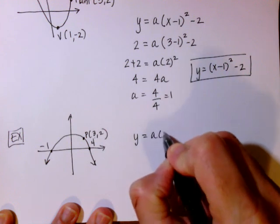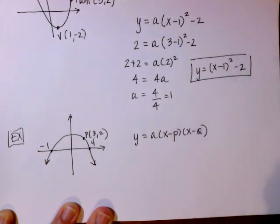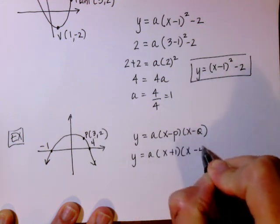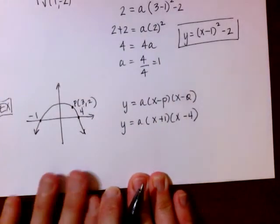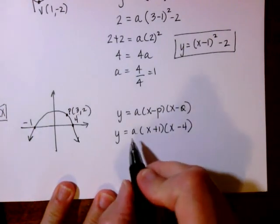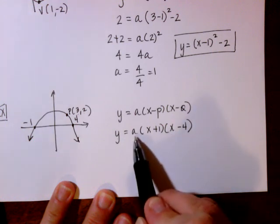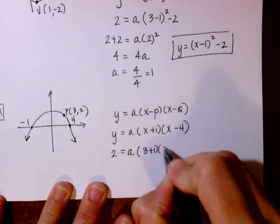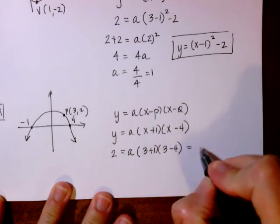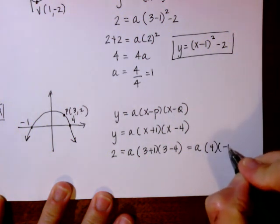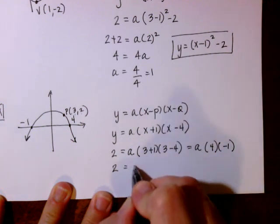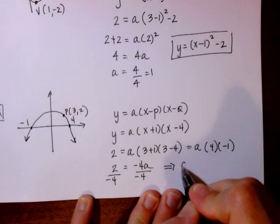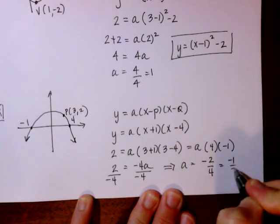Writing the generic equation y equals a times (x minus p)(x minus q), I substitute in what I know: y equals a times (x plus 1)(x minus 4). Remember, the signs inside the parentheses are always opposite when talking about x-intercepts. Now I substitute in the point (3, 2) to solve for a: 2 equals a times (3 plus 1)(3 minus 4), which gives 2 equals a times 4 times (−1), so 2 equals −4a. Dividing both sides by −4, a equals −1/2.